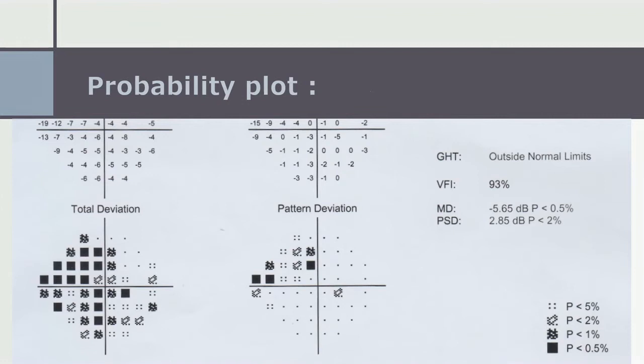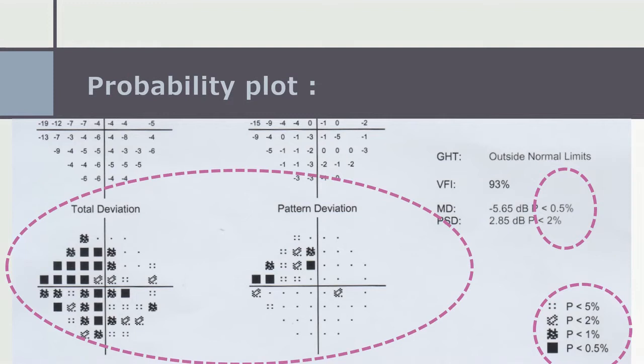Again in the field of vision we can see the probability plot of total deviation and of pattern deviation. These are also related to the area under the curve. So let's start.